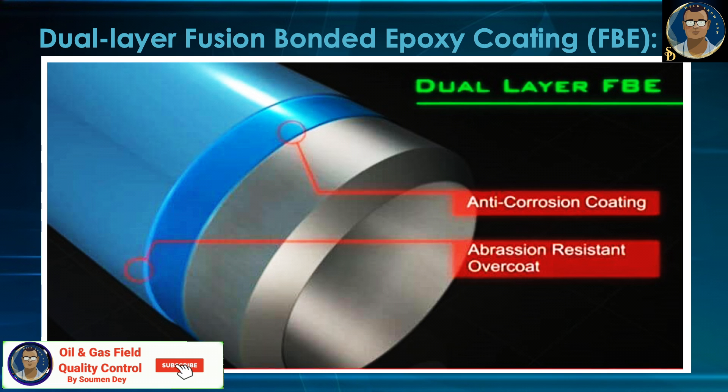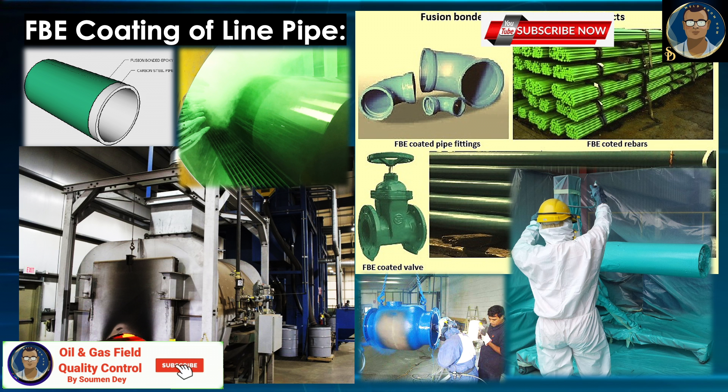The third type is dual-layer fusion bonded epoxy coating — also FBE but dual layer. This is a variant of FBE where, instead of a single layer, one more layer of FBE is added for added protection. The first layer is called the corrosion protective layer, which is fusion bonded epoxy offering excellent corrosion protection and very good bonding with the blasted steel surface. The second layer consists of a coating — either fusion bonded epoxy, polyurethane, polyester, or some other coating — which serves as an abrasion resistance overcoat, protecting the base FBE coat from abrasion and physical damage.